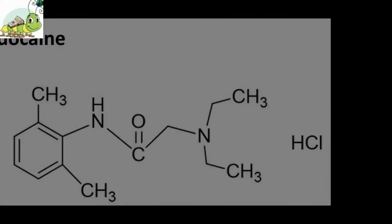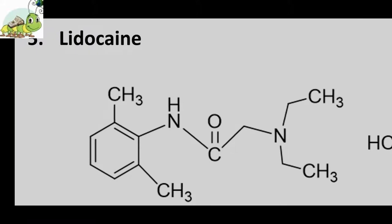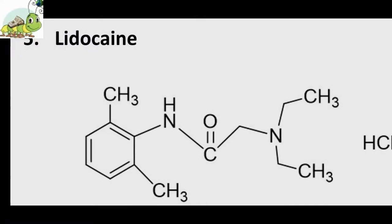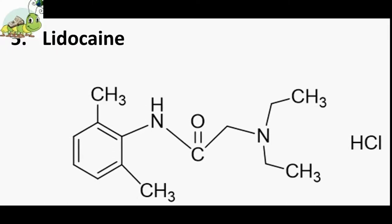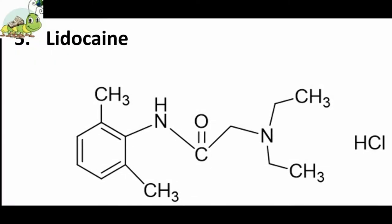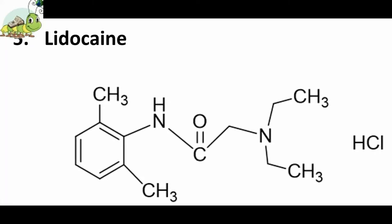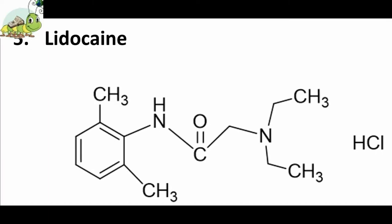Fifth drug: Lidocaine. Lidocaine was introduced as a local anesthetic and is still used extensively for that purpose. Lidocaine is an effective sodium channel blocker, binding to channels in the inactivated state. Like other class 1b agents, it acts preferentially on diseased tissue, causing conduction block and interrupting recurrent reentrant arrhythmias. Lidocaine is a class 1b drug.